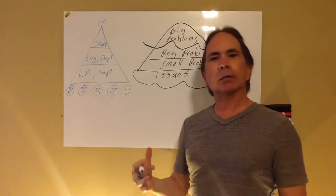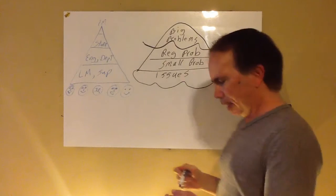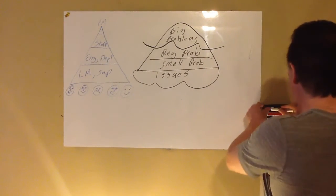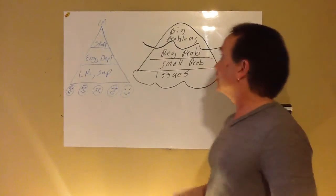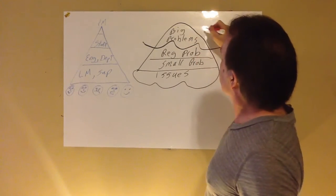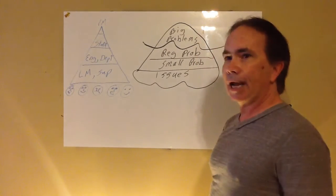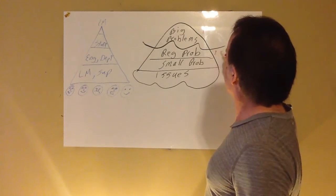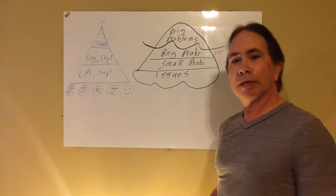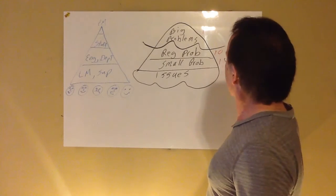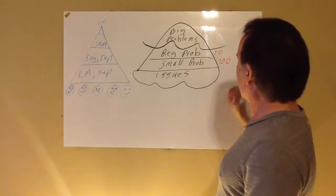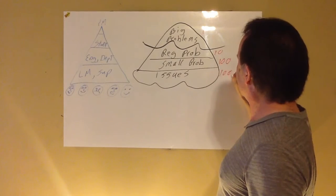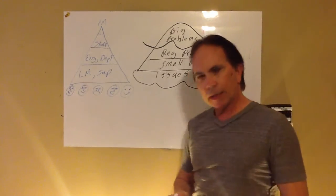They say there's a 10X principle when you're dealing with these. For the big problems, we'll say we have one big problem. For each one of those big problems, you've probably got 10 regular size problems. For the 10 regular size problems, probably about 100 small problems and about 1,000 issues.